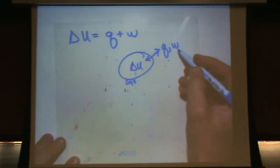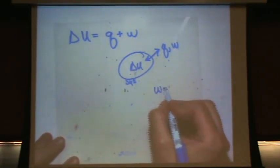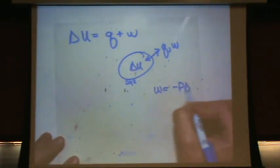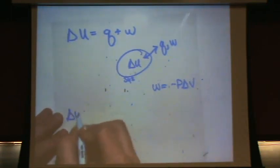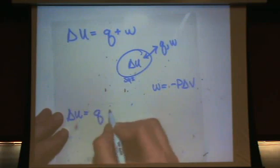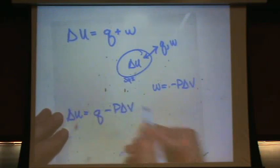Q is heat, W is work. Work in this chapter is given by the following formula. There's other formulas for it, but usually chemical work is P delta V work. So that means you can say delta U is Q minus P delta V, another way to write it.